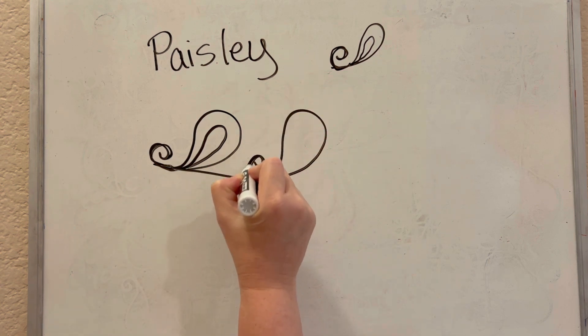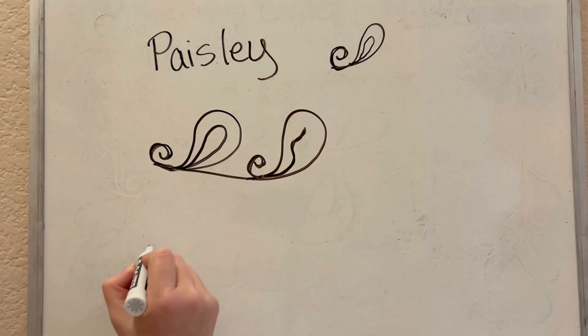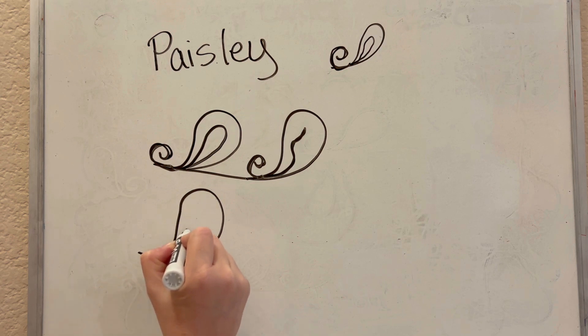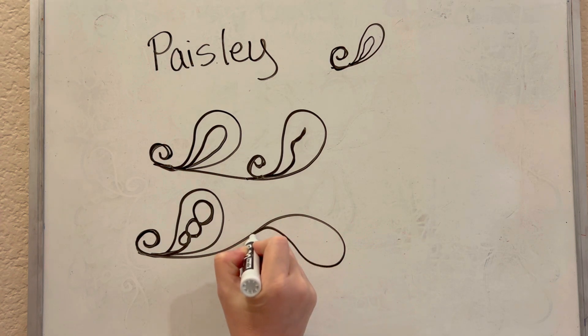We could do a little flame stitch in there. We could do some other fancy designs. Then I'm trying to backtrack there to get the tail and get going the other way.